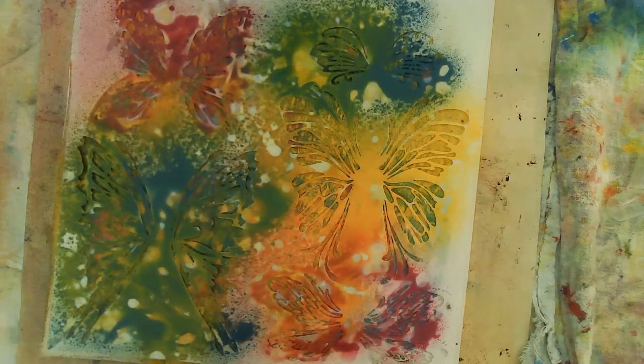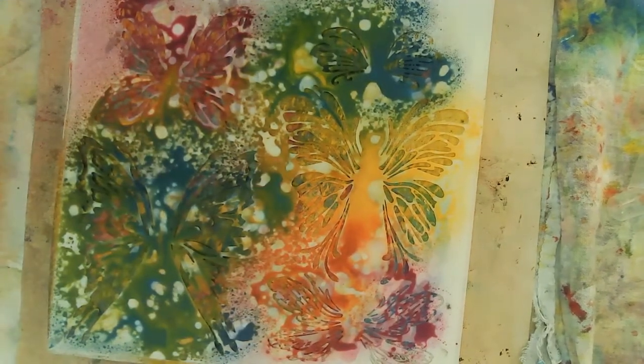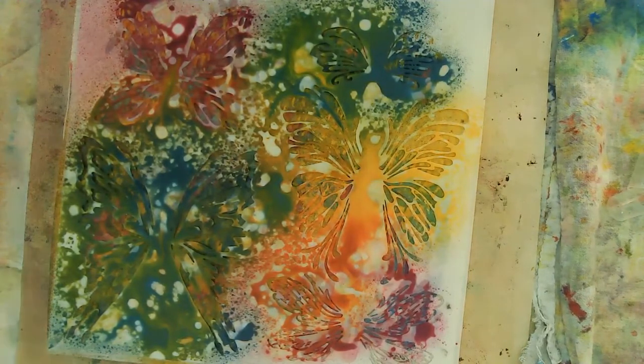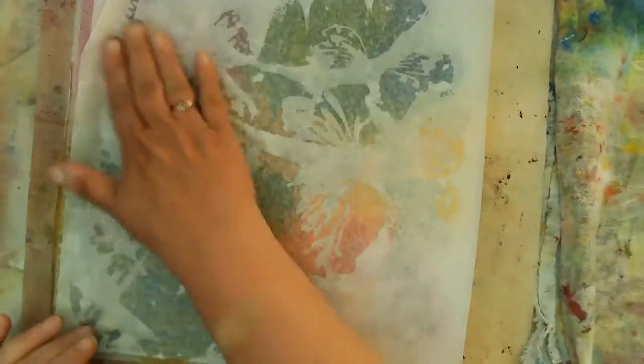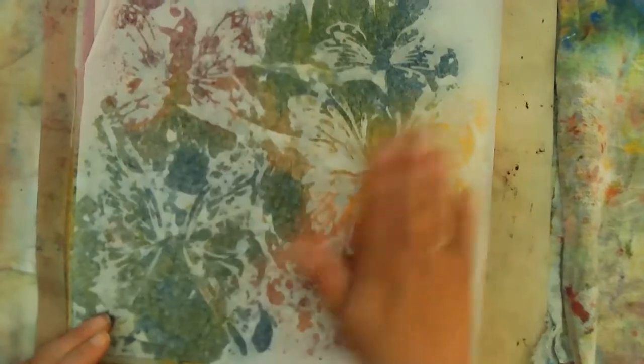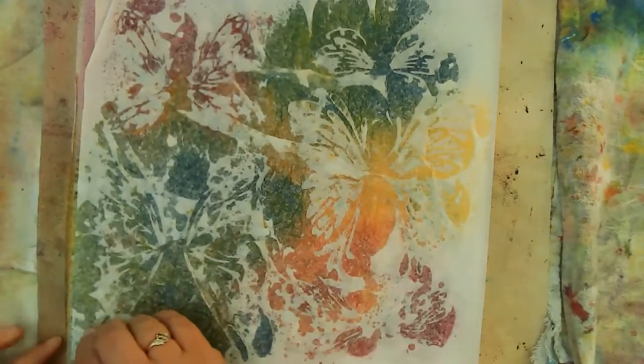And then I do take my heat tool to this and dry it while the stencil's on it, being very careful to not get too close to the stencil because I don't want to melt it. And so after I did that, then I went ahead and laid another piece of parchment slash tissue paper over the top, created a second impression.